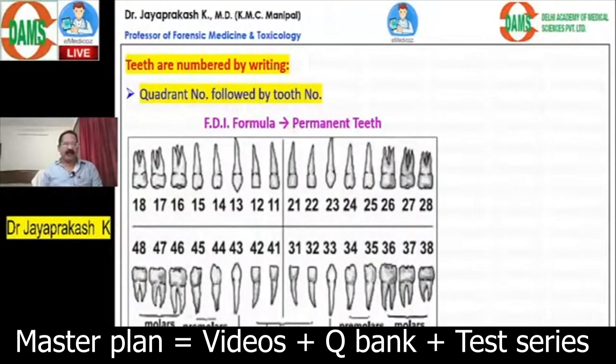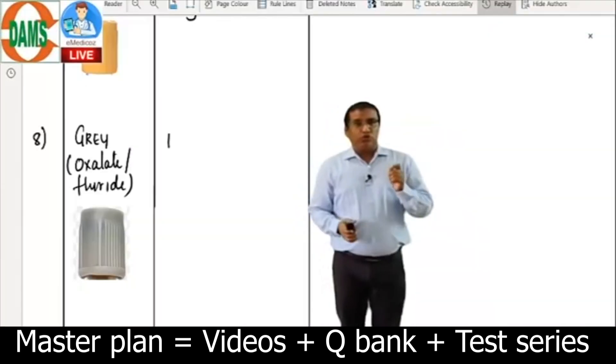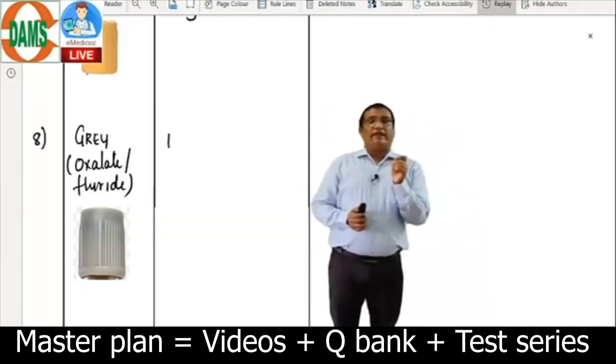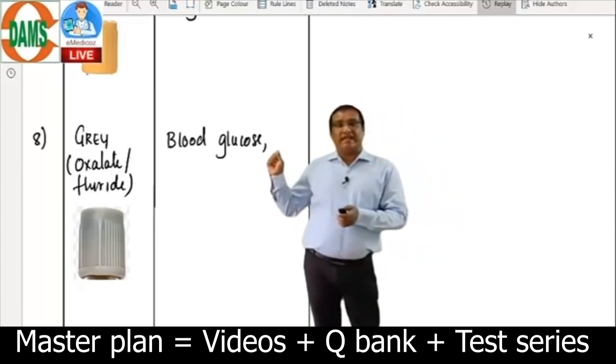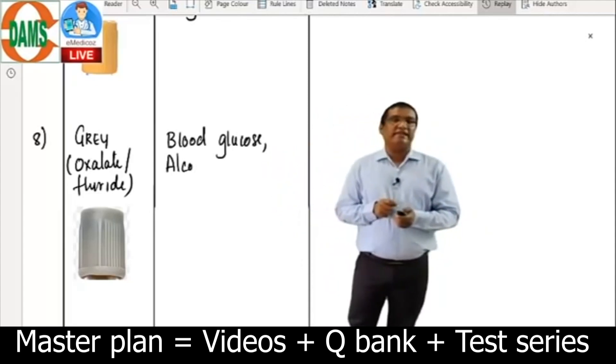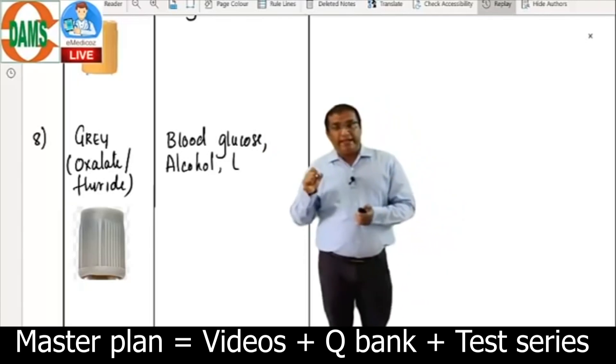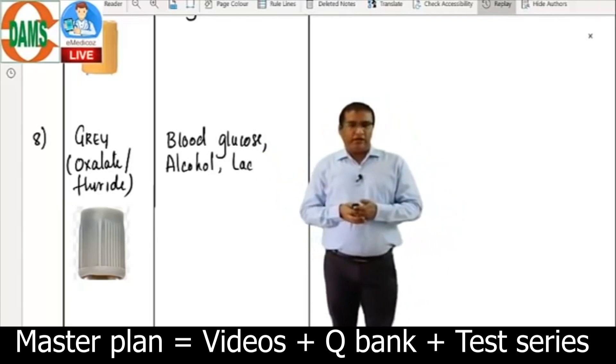Sodium fluoride's function is it is a glycolytic inhibitor, so it is used for blood glucose analysis. Apart from blood glucose analysis, even if you want to analyze alcohol, you will use this for alcohol analysis.